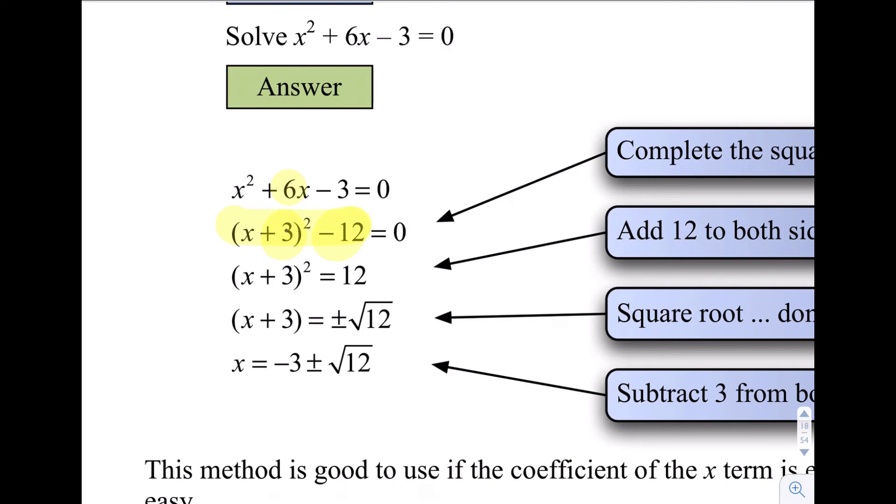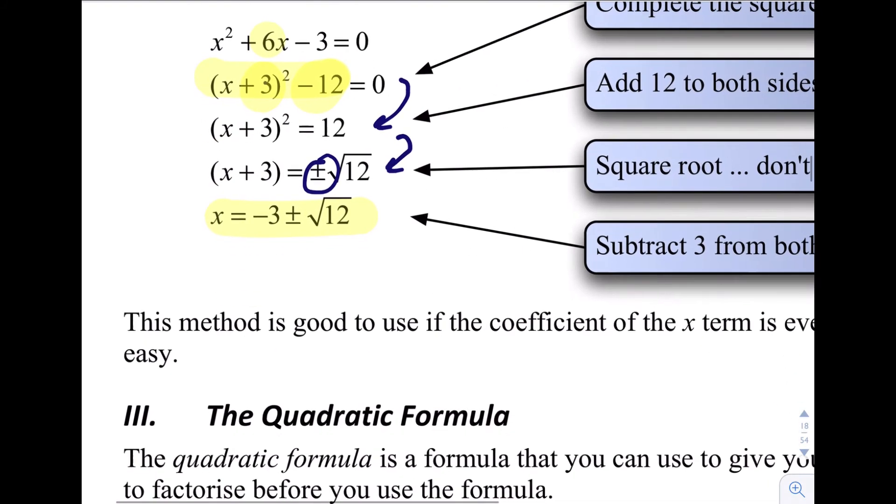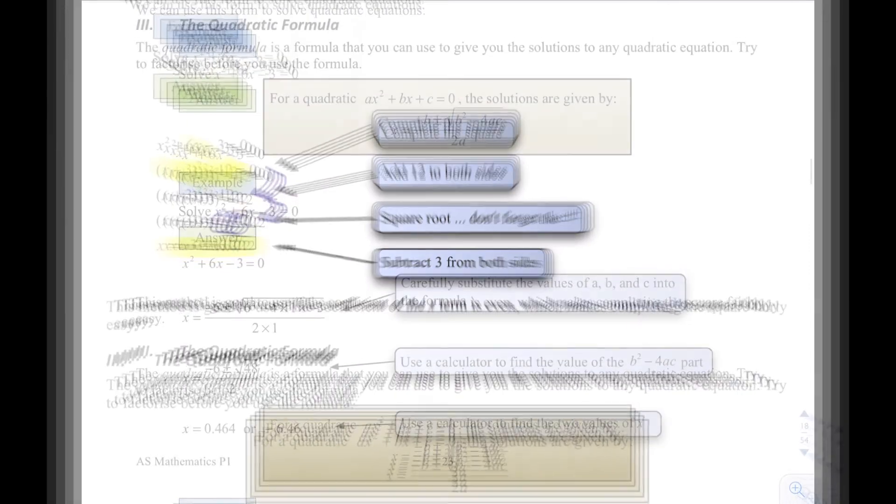I then add 12 to both sides, here to here. Take the square root of both sides from here to here, remembering the plus or minus, and then subtract 3 from both sides to get my final answer for x. So notice there's two solutions, negative 3 plus or minus the square root of 12. So this method is good to use if the coefficient of the x term is even.